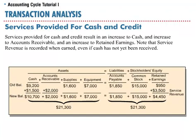SoftBite provides programming services of $3,500 for customers. It receives cash of $1,500 and bills the balance of $2,000. This results in an increase to cash of $1,500, an increase to accounts receivable of $2,000, and an increase to retained earnings of $3,500. The increase to retained earnings is the result of service revenue.